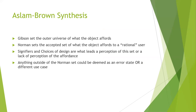A Hegelian dialectic: if we have a thesis and an antithesis, maybe there's a synthesis. What Eslong and I have been working on is how to synthesize these — using both elements of Norman and Gibson. Gibson sets the outer universe of what the object affords; Norman sets what is the best thing according to the rational user. Anything outside of the Norman set might be deemed an error or a different use case. This conjoins the two atmospheres into something more concrete.